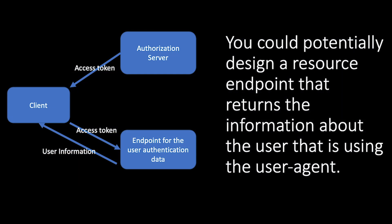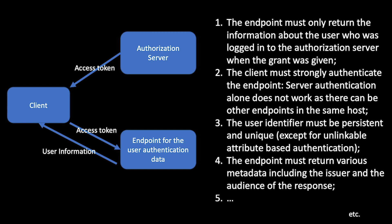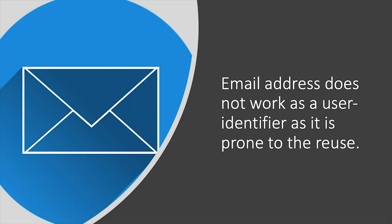You could potentially design a resource endpoint that returns information about the user that's using the user agent. In that case, you could use the access token to log the user in after verifying the endpoint response. But you have to make sure that endpoint is under the contract that's only returning information about the current user, and the payload contains the user's permanent identifier and the audience that is set to the client. Note that an email address doesn't work as the identifier in general, as it's prone to reuse.